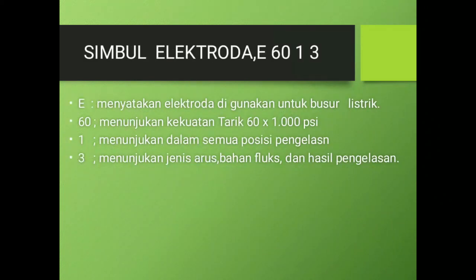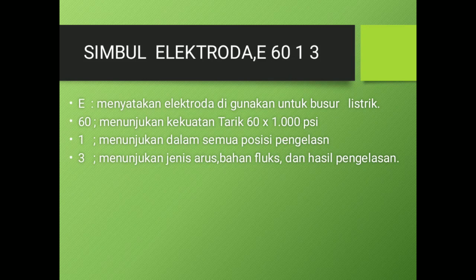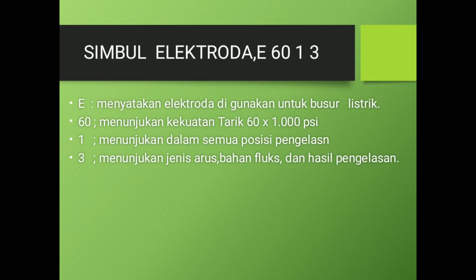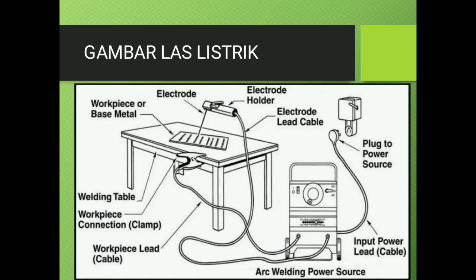Berkaitan dengan elektroda, di situ ada kode E6013. E menyatakan elektroda yang digunakan untuk busur listrik. E60 menunjukkan kekuatan tarik 60 kali 1.000 PSI. Angka 1 menunjukkan kemampuan posisi pengelasan. Angka 3 menunjukkan jenis arus, bahan fluks, dan hasil pengelasannya.